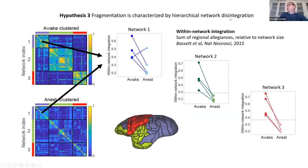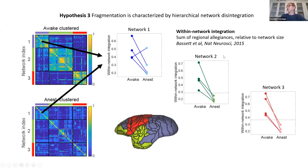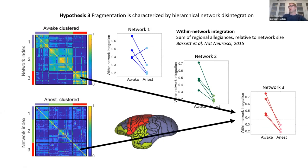Fragmentation is characterized by hierarchical network disintegration. We take the same clustering solution and impose it on the module allegiance matrix in the anesthetic condition. You can eyeball that network two and network three seem to be disintegrating and smearing into one another. We can quantify that with a measure of within-network integration — effectively the sum of regional allegiances relative to network size. Three out of four networks show this drop in within-network integration under anesthesia.